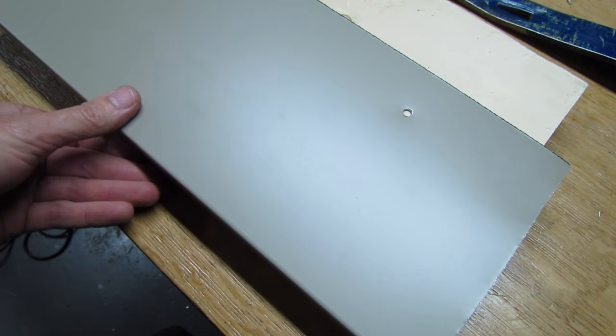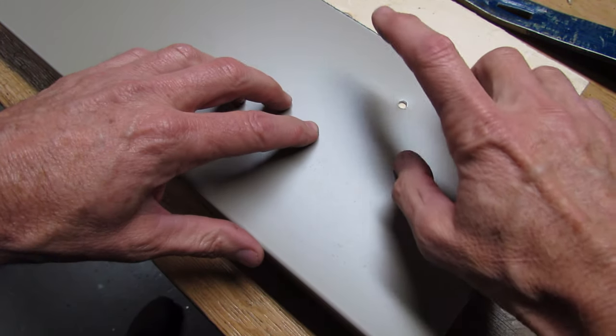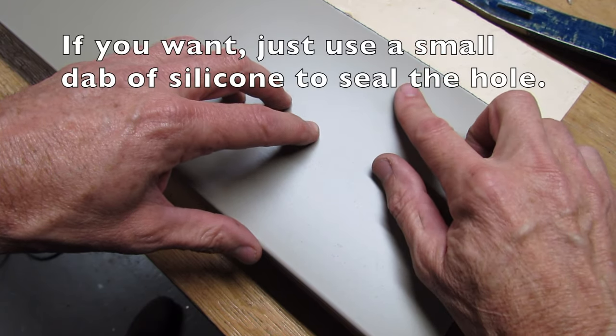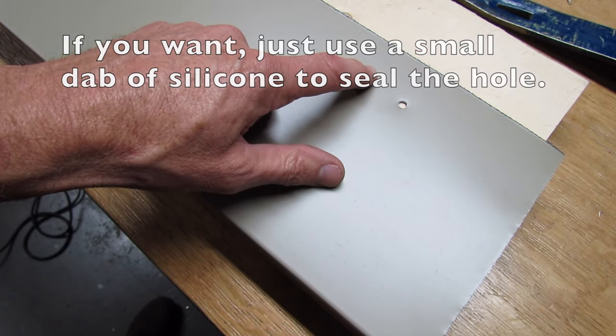Remember when you go to put this back on your house and nail it back down, the eavesdrop goes over top of this hole so you don't even have to worry about plugging it. Just put a nail in beside it and away you go.